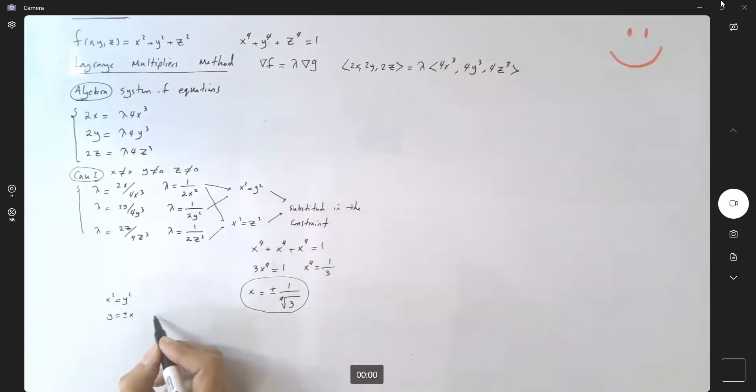And since x² = z², the same scenario applies: z = ±x, or z = ±1/∜3.